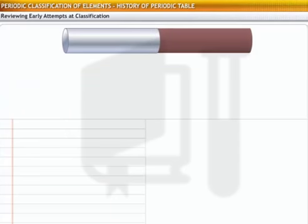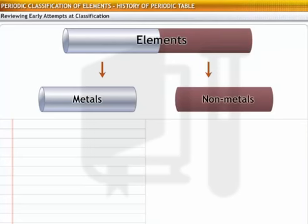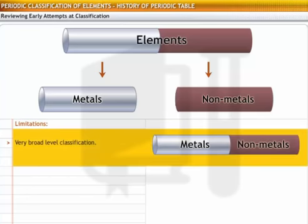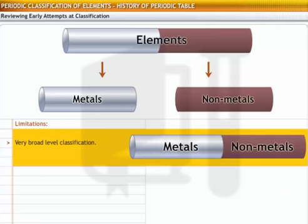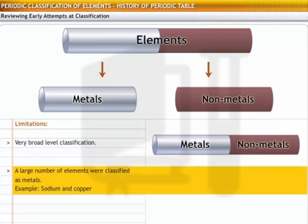The earliest classification categorized elements into metals and non-metals. However, this classification served only limited purpose because of the following reasons. The classification was at a very broad level. A large number of elements were classified as metals. However, they did not necessarily display similar chemical properties.